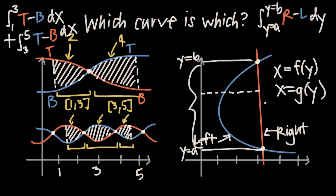Those are the main complications you might run into. In general, figuring out which curve is on the top and which is on the bottom — or which is on the left and which is on the right — is fairly straightforward, and getting comfortable with this will really help you with your area-between-curves problems.